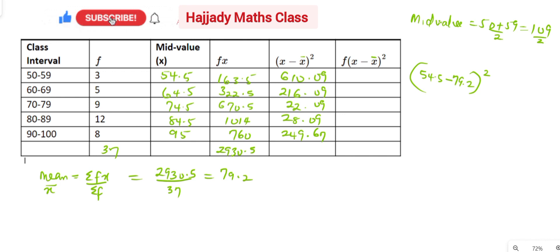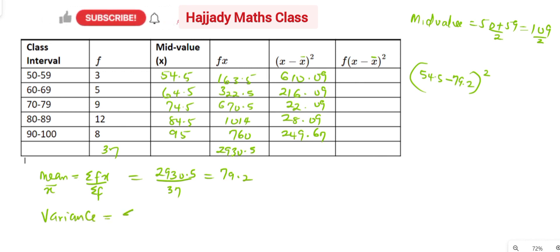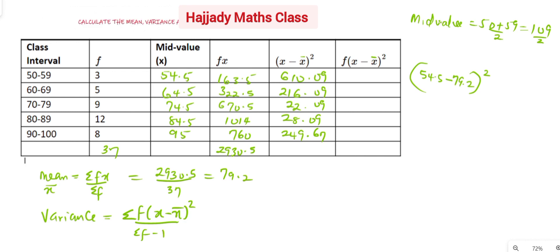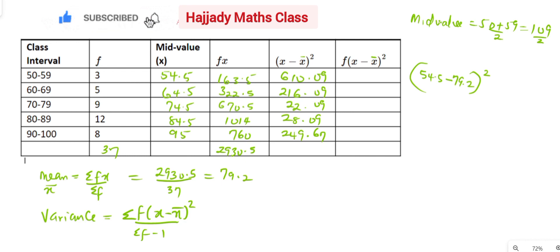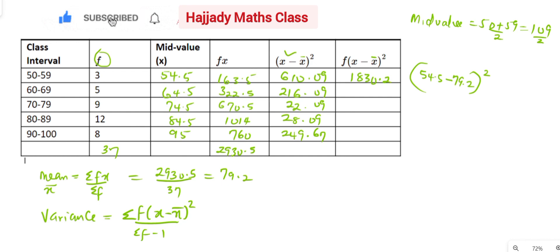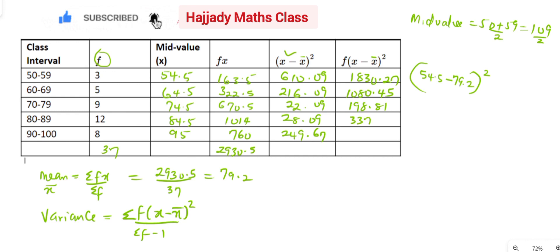Lastly, we are going to calculate f times (x minus x̄)². From the formula for variance — which is summation of f times (x minus x̄)² over n minus 1 — there's a need to get f multiplied by (x minus x̄)². So multiplying frequency by the squared deviations: the first value gives 1830.27; here 1080.45; here 198.81; and here 337.08.